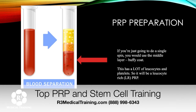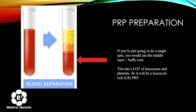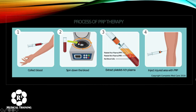If you're doing a single spin, you use the middle buffy coat layer, which has a lot of leukocytes and platelets — that produces a leukocyte-rich PRP. The process is: collect the blood, put it in the tube or kit, centrifuge it, then aspirate out the buffy coat while minimizing the amount of red blood cells you get. Having some plasma in there is just fine.